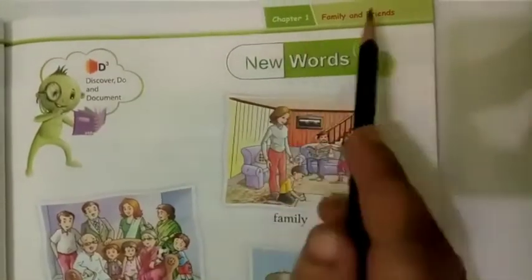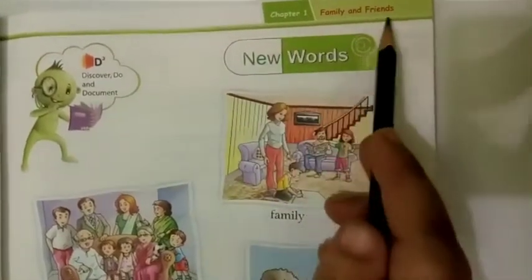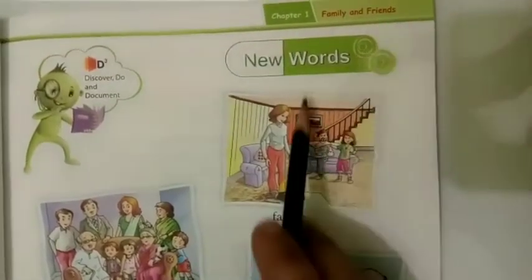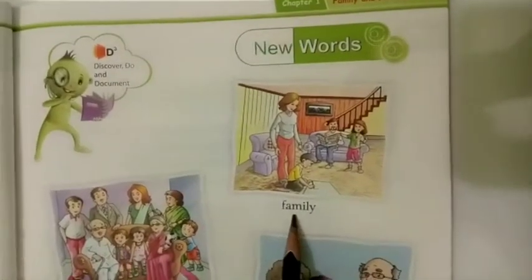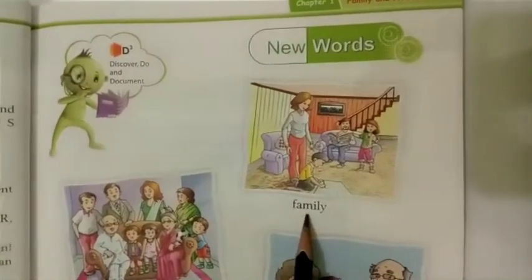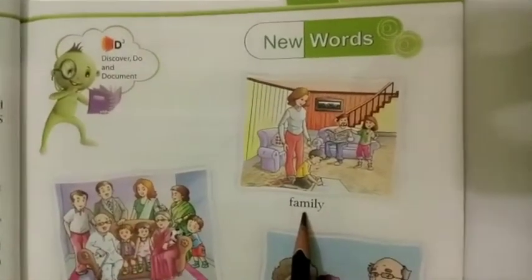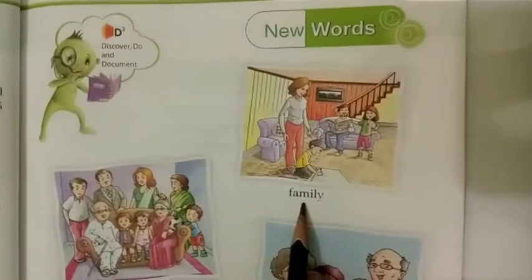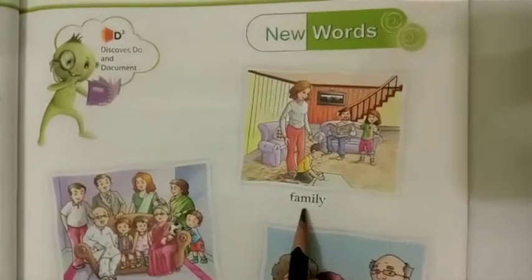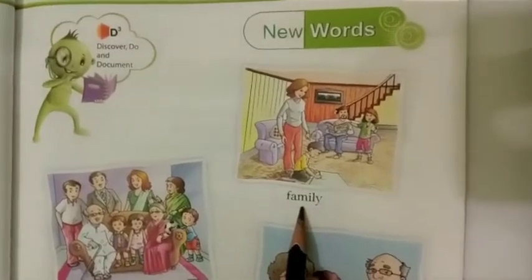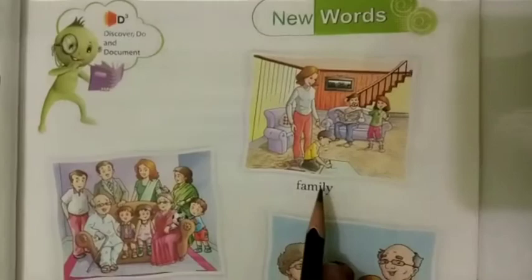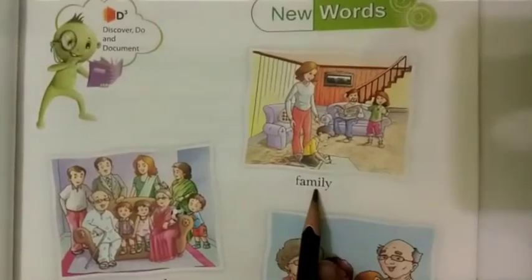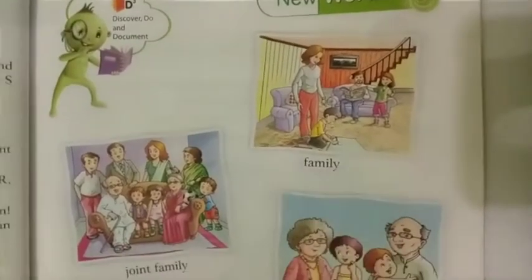Chapter number 1, Family and Friends. New words — Family. Now what is family? Family means a group of people related to each other and living together. This is known as family. Now, Joint family.